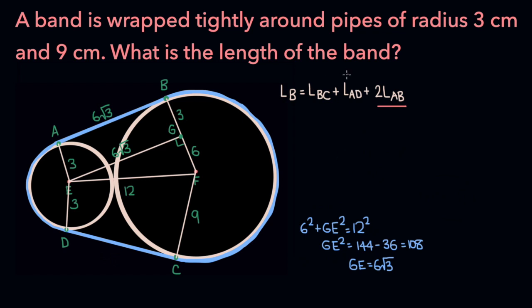Now that we've found the length of AB, let's try to find the length of these two arcs. We're going to need to know what this angle is, and to do that, we're going to look at triangle GEF again.